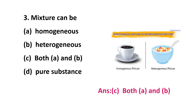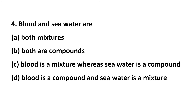Third question: a mixture can be — option A: homogeneous, option B: heterogeneous, option C: both A and B, option D: pure substance. Mixture is not a pure substance, so option D is wrong. It may be homogeneous or heterogeneous, so the answer is option C. Homogeneous mixture means the substance is mixed thoroughly — for example, a cup of coffee where sugar molecules and coffee powder are mixed thoroughly. Heterogeneous mixture — for example, cornflakes where we add milk, fruits, and cornflakes and we can see different particles. So a mixture can be both homogeneous and heterogeneous.